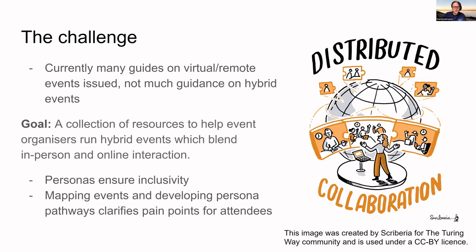Our goal was to create a collection of resources to help event organizers run hybrid events and make sure the interaction works fine. We've focused on Personas — basically fake people that we make up with certain attributes to ensure those events are as inclusive as possible. We've also created pathways, which are stories of how those people would interact with the event, to highlight pain points of certain choices that you make in event organization.